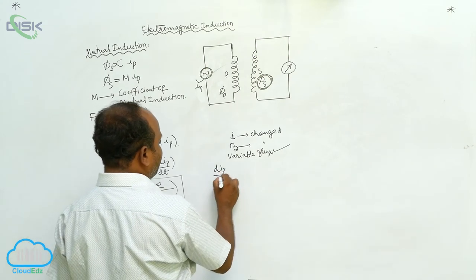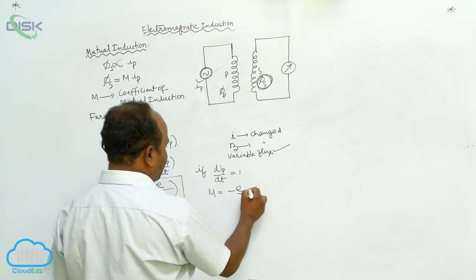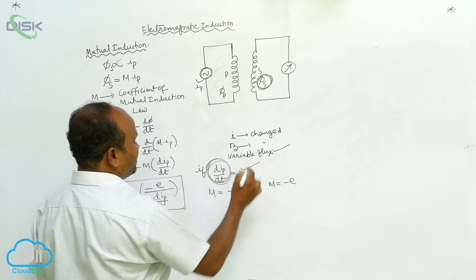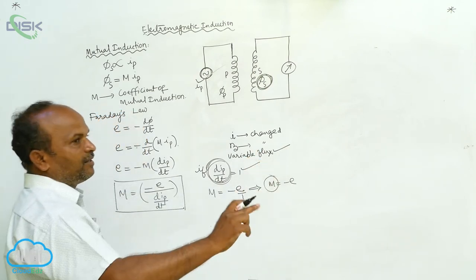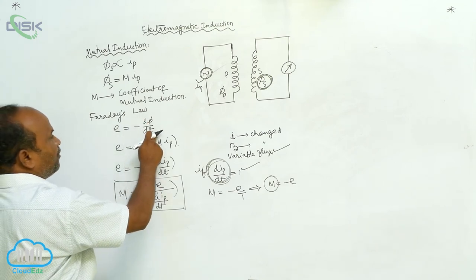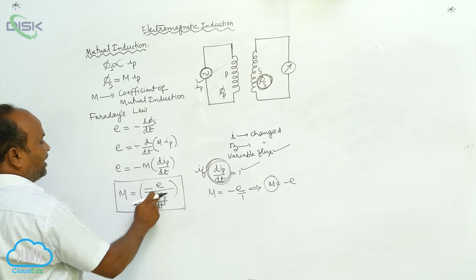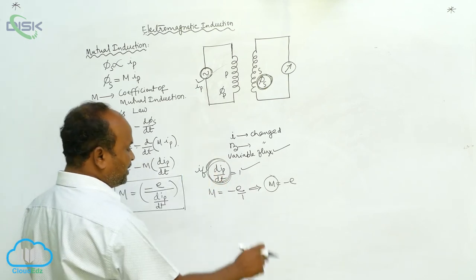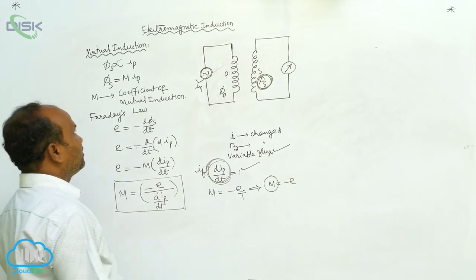If dIP/dt equals 1, then M equals minus E divided by 1, which equals minus E. That is, if the rate of change of current in the primary coil is unity, whatever the EMF produced in the secondary coil is called the coefficient of mutual induction between the two coils.